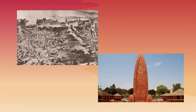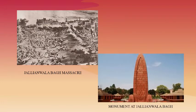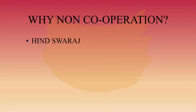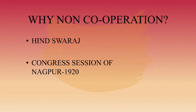In his famous book Hind Swaraj, Gandhi Ji wrote that the British were able to establish their rule in India with the cooperation of Indians. If Indians refused to cooperate, their rule would collapse and Swaraj would come. Finally, in the Congress session at Nagpur in December 1920, the Non-Cooperation program was adopted.